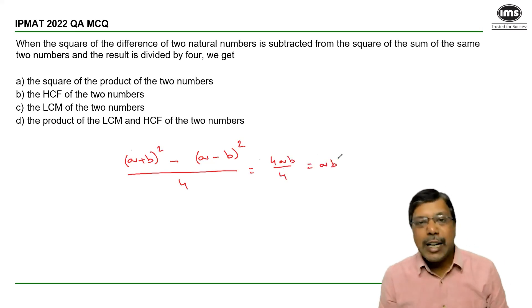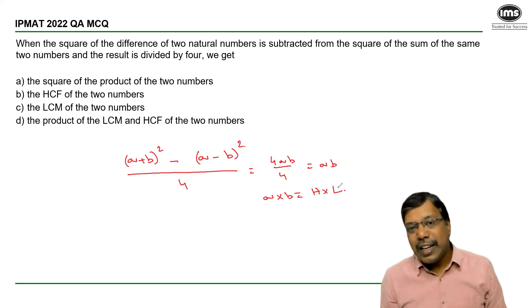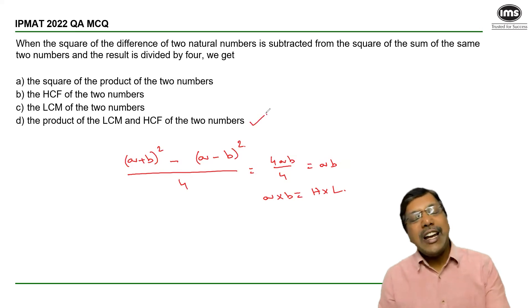So the end result is the product of both numbers, which I don't have in the answer options. But if you observe closely, we know that product of two numbers is always equal to product of their HCF and LCM. So hence the suitable answer will be option D.